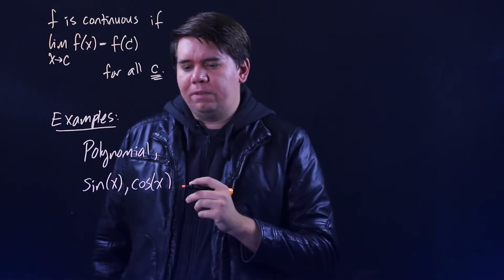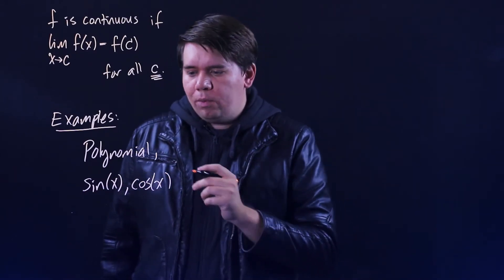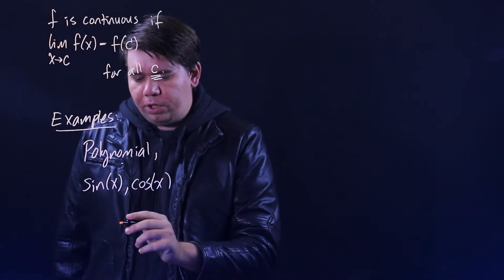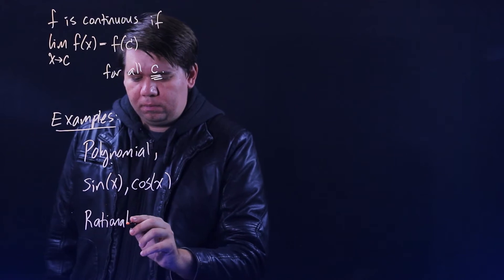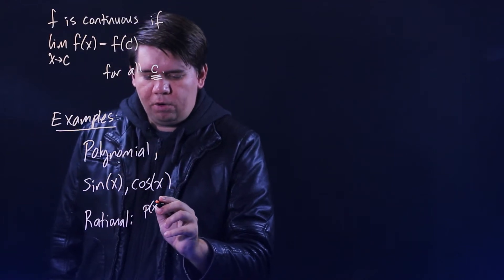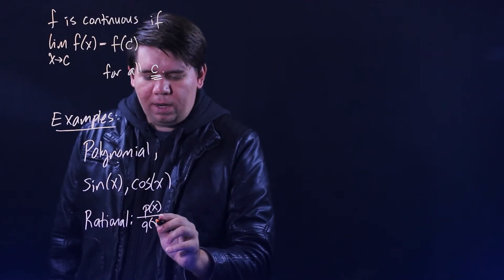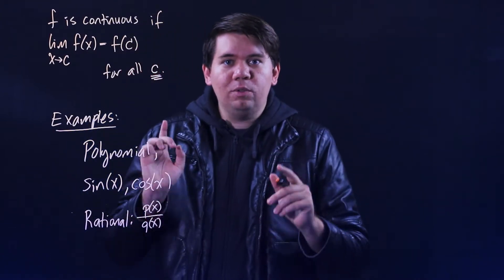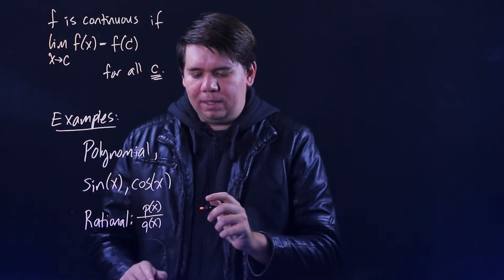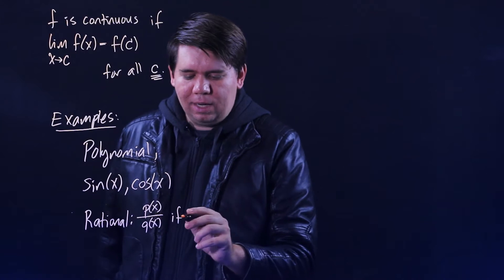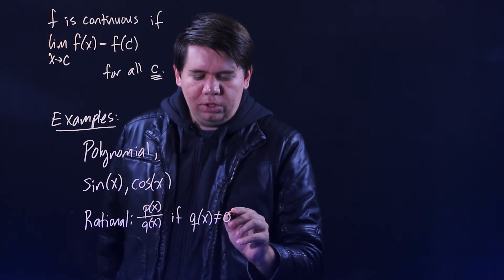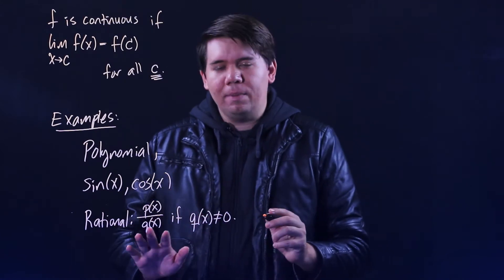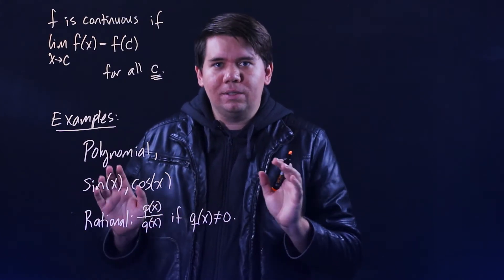What are some other examples of continuous functions? Well, when you have a rational function, p(x) over q(x), when you have some rational function, some polynomial divided by some other polynomial, that will be continuous as long as you're not dividing by zero. So if the bottom is not zero, wherever the bottom is not equal to zero, you're continuous there. If you have something on the bottom that's never zero, then you're continuous everywhere.